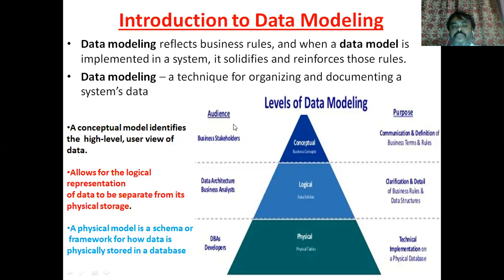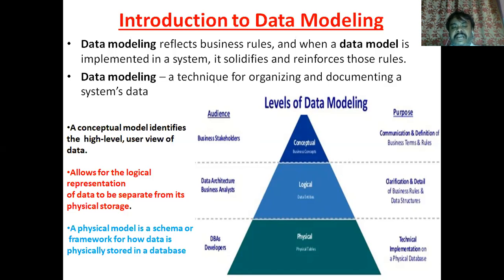At the outermost or top level there are the audience or business stakeholders. They interact with the conceptual model, which is a high-level end-user system view having no inner details. In between the conceptual and physical layers is the logical layer of data modeling, which connects the conceptual with the physical. The purpose of the logical layer is to allow logical representation of data so it can be separated from physical storage. At the physical level of data modeling, we are concerned with how the schema will operate on the basis of the data in the database.